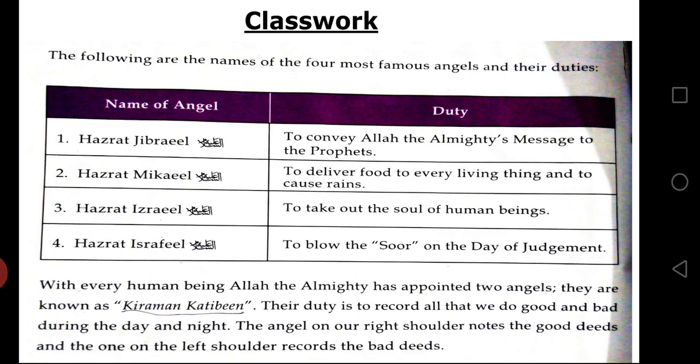That is why whenever we are doing something, our parents, teachers, and elders always say that Allah is watching us. This is also one way that Kiraman Katibin are sitting on our shoulders — appointed on our shoulders. The angel on our right shoulder records the good deeds, whatever we do day or night, and they never sleep. The angel on our left shoulder writes down all the bad things we do, no matter if it is day or night. They record everything whatever we are doing.